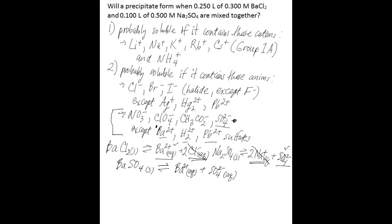To know for sure whether a precipitate forms, you have to get quantitative by calculating the ion product constant, abbreviated IP. The ion product constant in this case is equal to the concentration of barium multiplied by the concentration of sulfate. You can compare IP to Ksp to determine if precipitation of barium sulfate will occur — this is similar to calculating Qc and comparing it to Kc to determine whether a reaction is at equilibrium.